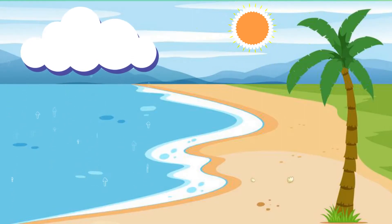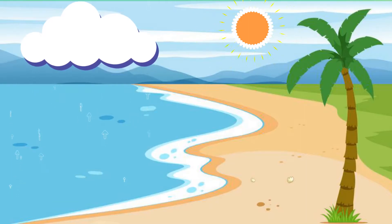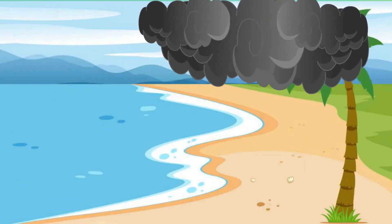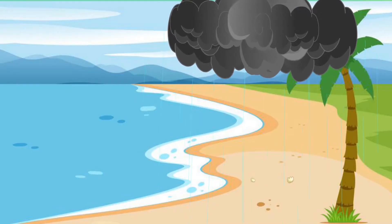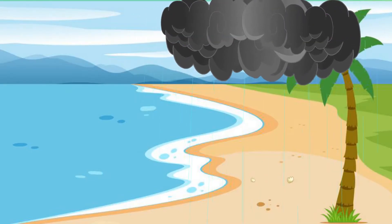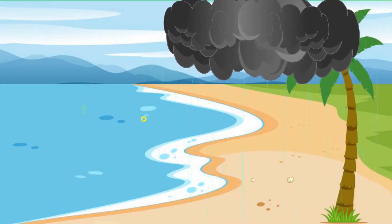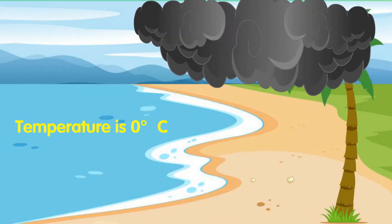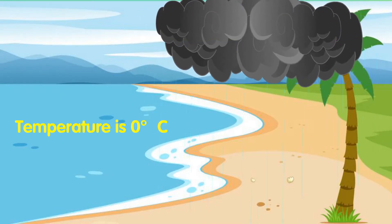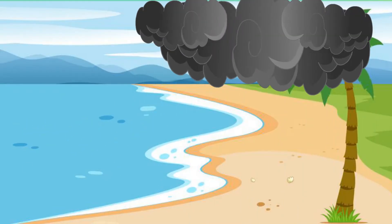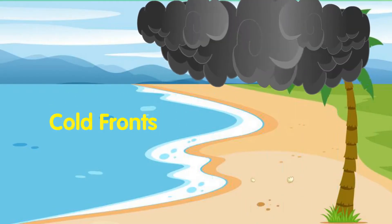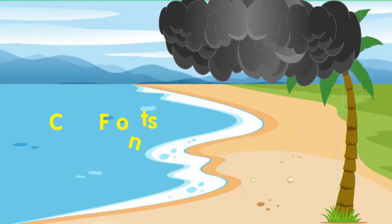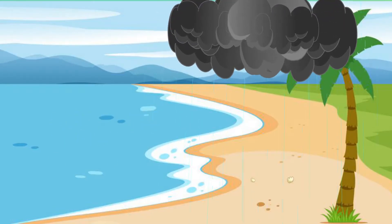Graupel and hail indicate convection. When either are present at the surface, it is indicative that some form of precipitation is extant at the freezing level — a varying point in the atmosphere where the temperature is zero degrees Celsius. In mid-latitude regions, convective precipitation is often associated with cold fronts, and is often found behind the front, occasionally initiating a squall line.